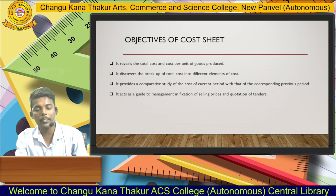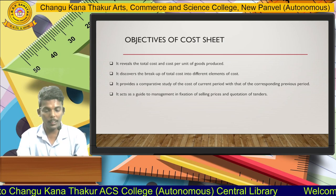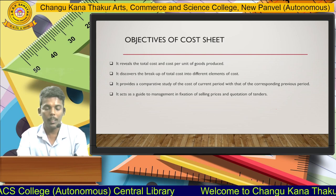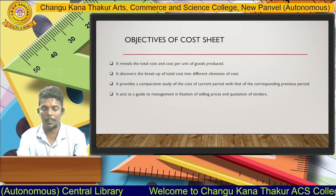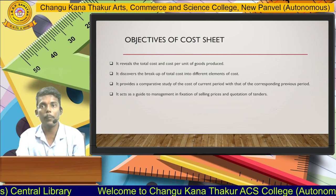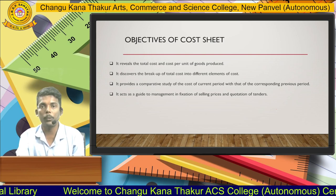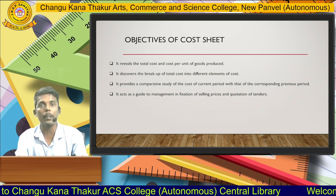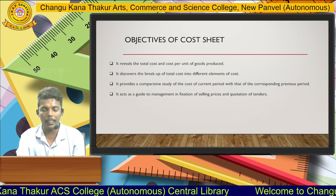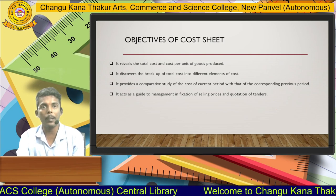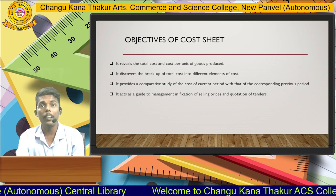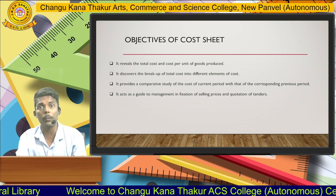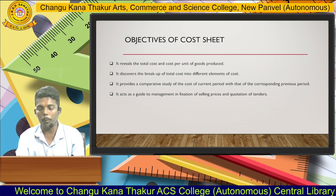Now we discuss the objective of the cost sheet. The cost sheet reveals the cost and cost per unit of goods produced, and it discovers the breakup of total cost into different elements such as administrative cost, selling and distribution cost, and factory overhead. It provides a comparative study of the current period and the previous period cost of production. It also acts as a guide for management for the fixation of the selling price, as we compute the selling price according to the production unit and sales unit.